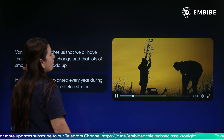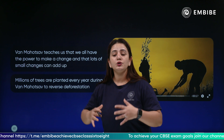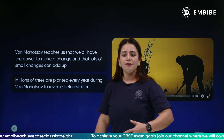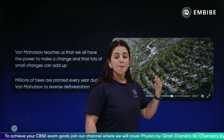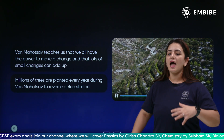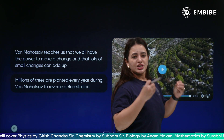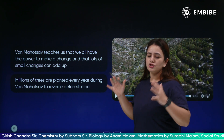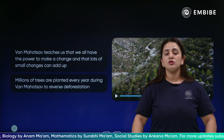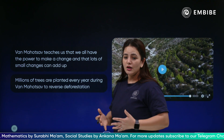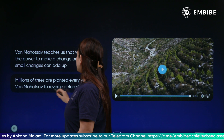Van Mahotsav teaches us that we all have the power to make a change. Anything destroying our earth, our habitat, or hampering our conditions to live — we as a community can come together and make a change. Small and minor steps add up to create a big change. Millions of trees are planted every year during Van Mahotsav to reverse deforestation.